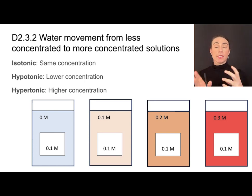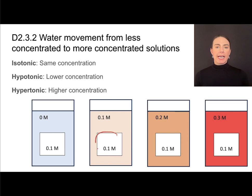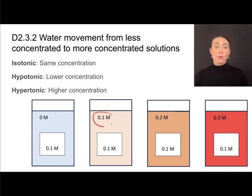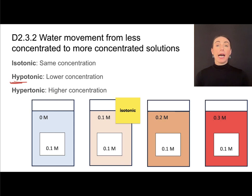Depending on the differences in solute concentrations, we have descriptive words to talk about these solutions. An isotonic solution has the same concentration as whatever you're comparing it to. If a cell is in a 0.1 molar solution and the surrounding solution has the same concentration, it is isotonic — the root word 'iso' means same. If the solution has a lower concentration than what you're comparing it to, it is said to be hypotonic.